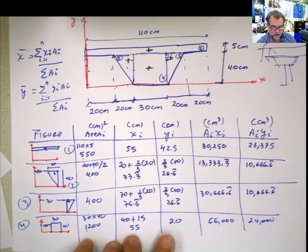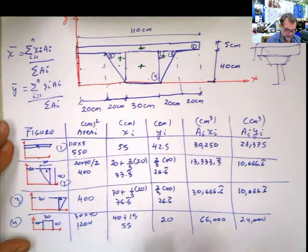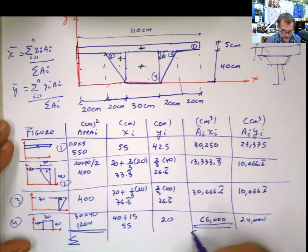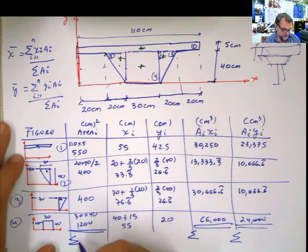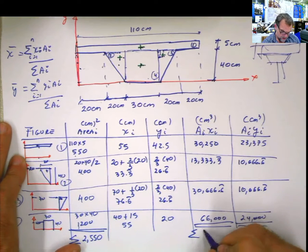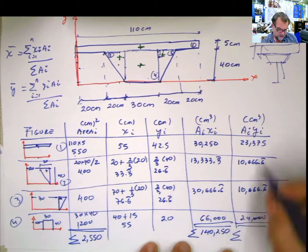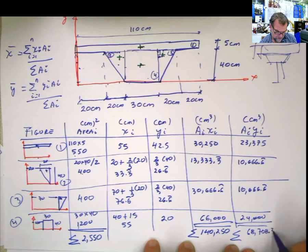Now, look at the formulation again. Formulas. Summation of xi ai. I need summation of area. And then summation of xi ai. And I need summation of ai yi. When you add this up, this is 2,550. By adding this, it's 140,250. And then if I'm not mistaken, you can check it, it's 68,708.3.